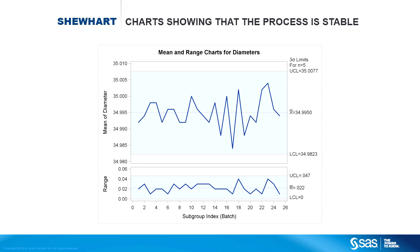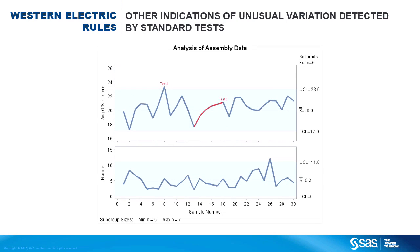X-bar and R charts are two kinds of control charts for continuous measurement data. The Shewhart procedure can produce different kinds of charts for continuous data and for counts of defects or defective items. Here the X-bar chart has flagged two instances of unusual variation. The first is a subgroup value above the upper control limit. The second is a pattern of six consecutive subgroup values steadily increasing, which is detected by Test 3 of the Western Electric Rules. Each of the standard tests for special causes has approximately the same probability of occurring as a single point outside the control limits.